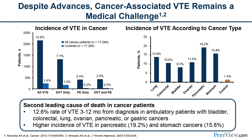Rates are much higher in the cancer population and vary quite significantly by type of cancer. Some cancers, such as pancreatic and stomach cancer, have very high rates of VTE — close to 20% for pancreatic cancer, compared to just 1.4% for control patients of similar age and comorbidities without cancer. Cancer-associated thrombosis, a combination of both venous and arterial thromboembolism, is also one of the leading causes of death in people with cancer and has important consequences.